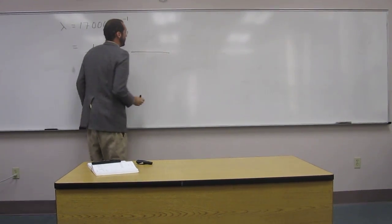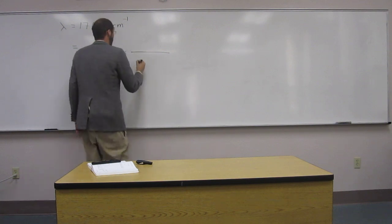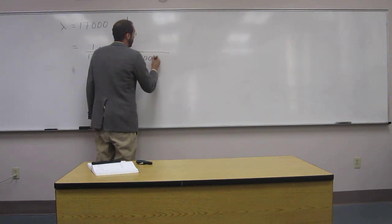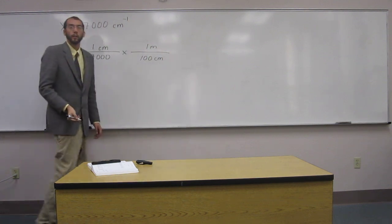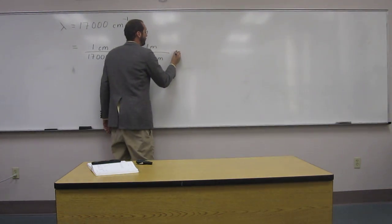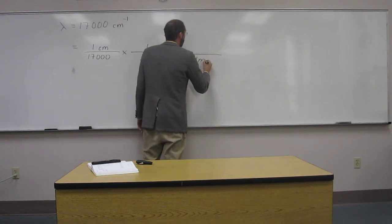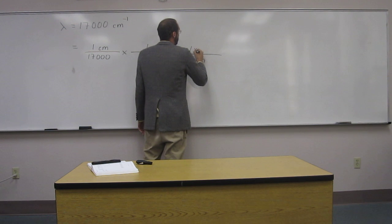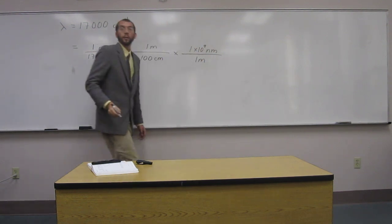When we do that, if I'm going to go up to meters and then back down to nanometers. So 100 centimeters is 1 meter, like that. And then, what do we have? 1 meter is 1 times 10 to the 9th nanometers, like that.